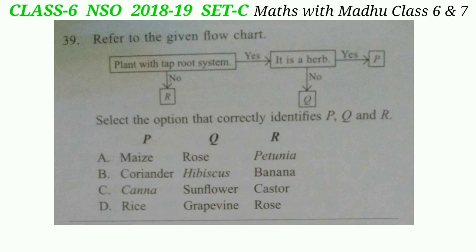Question 39: Refer to the given flowchart and select the option that correctly identifies P, Q, and R. Plant with taproot system — if yes, is it a herb? If yes, P; if no, Q. Plant with taproot system — if no, R. P will be coriander; Q is hibiscus, which is a shrub with a taproot system; and R is banana, which is a monocot with a fibrous root system. The correct answer is option B — P is coriander, Q is hibiscus, and R is banana.